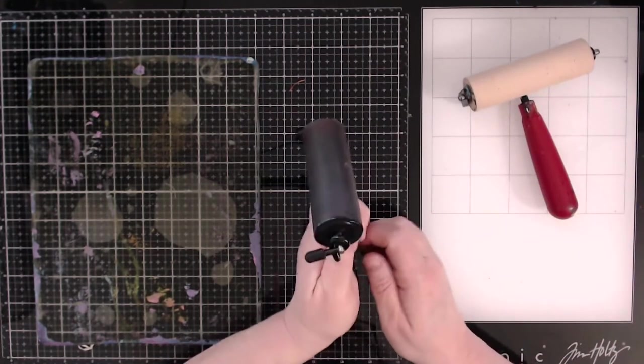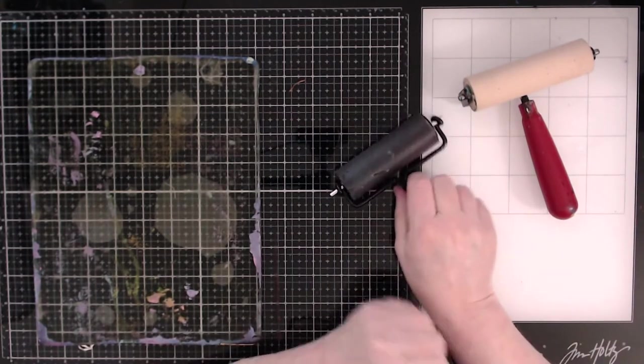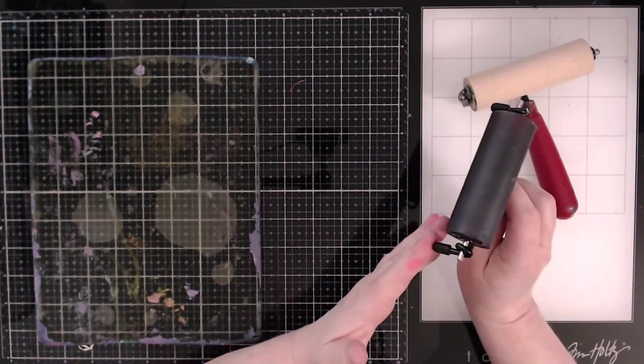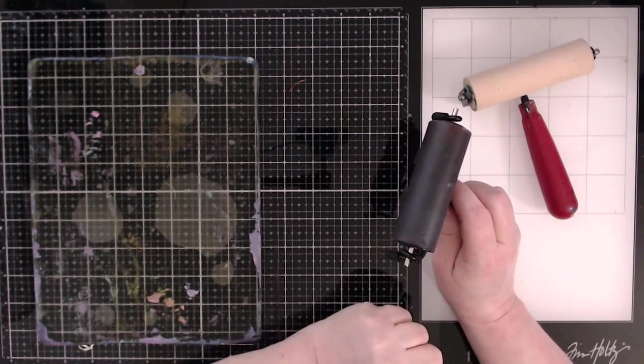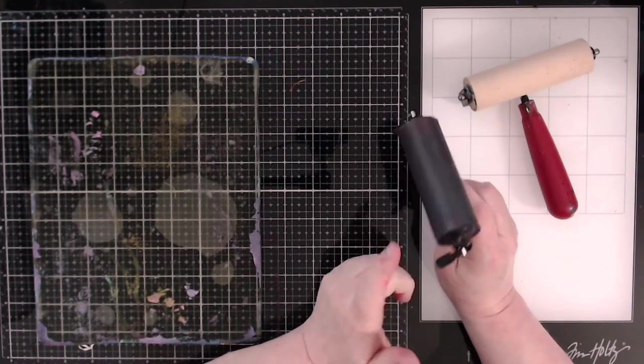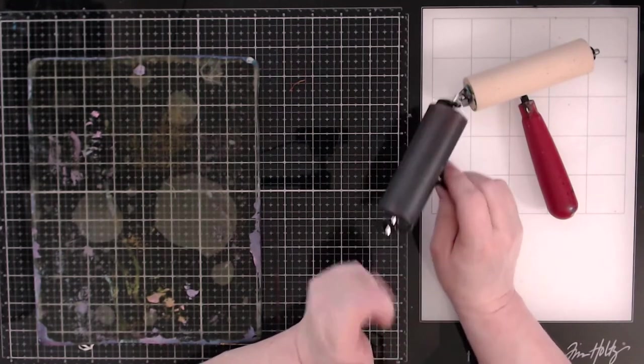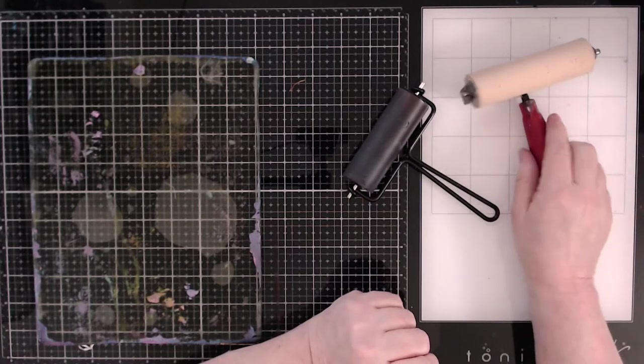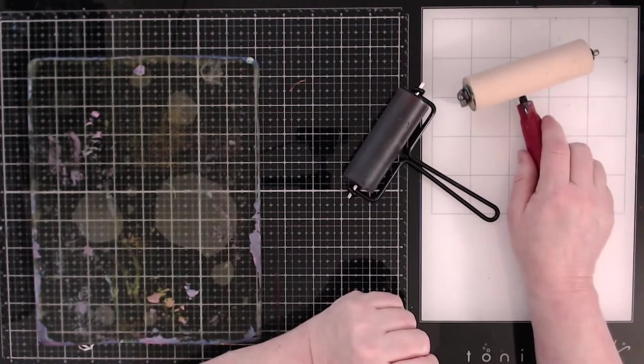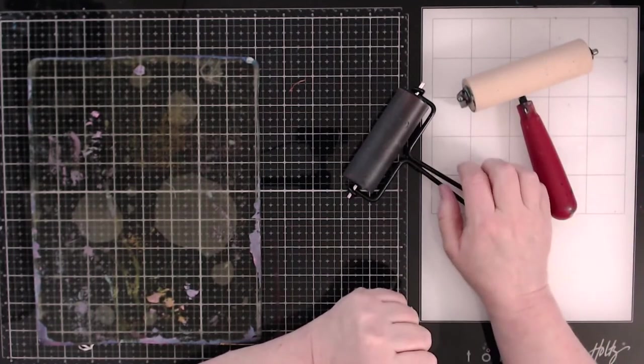And for the Tim Holtz, you just lay it down. And so there is space between the feet and the brayer. And so it doesn't touch your surface or get other stuff on your surfaces. So again, the speed ball brayer, you have to lay it on its backside and Tim Holtz, you have the feet.